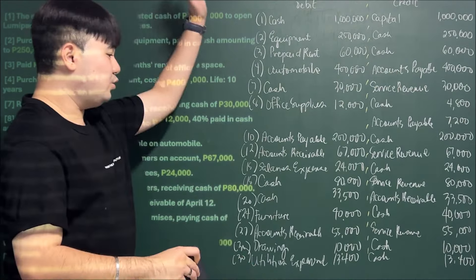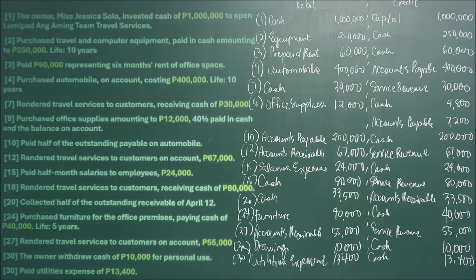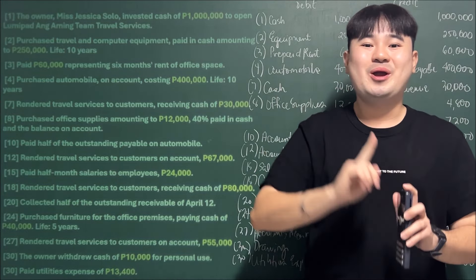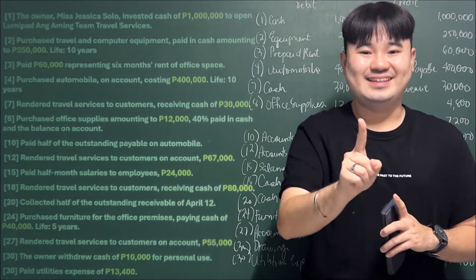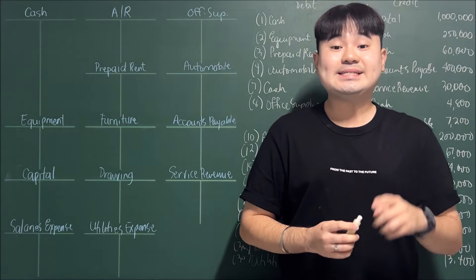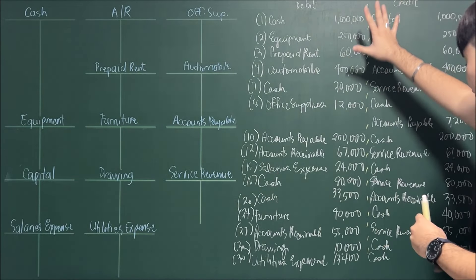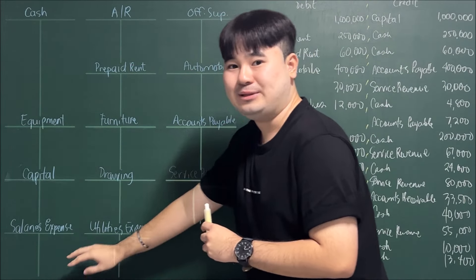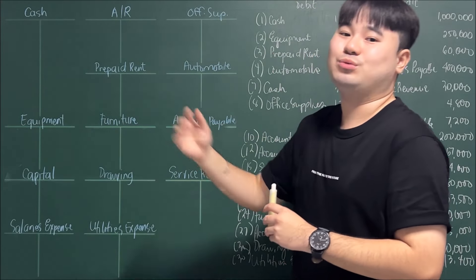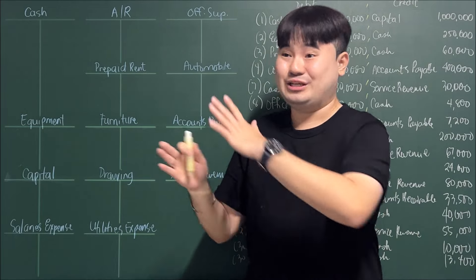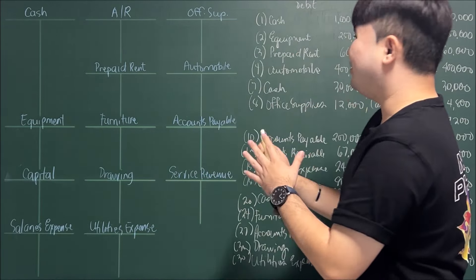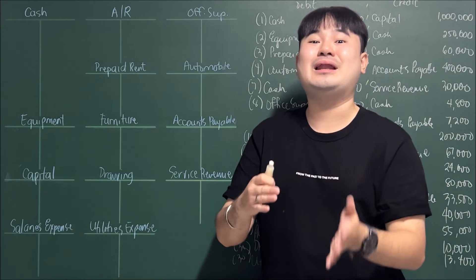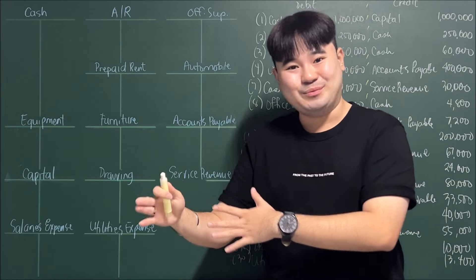Those are all our journal entries. Next step: posting. We will now transfer all our journal entries to their respective account balances using T-accounts. Whatever is a debit in the journal, place it on the debit side of the T-account; whatever is a credit, place it on the credit side. This step is very important — errors here are why your trial balance won't balance later.